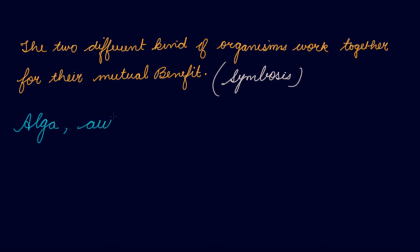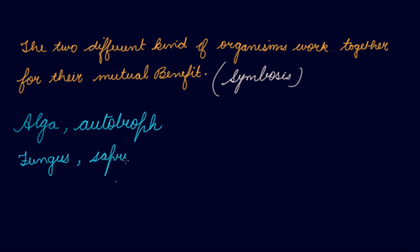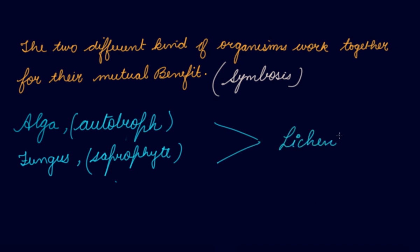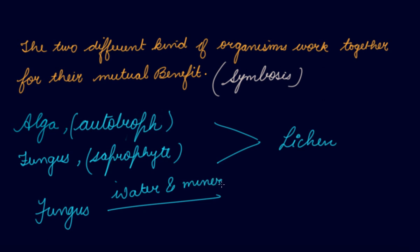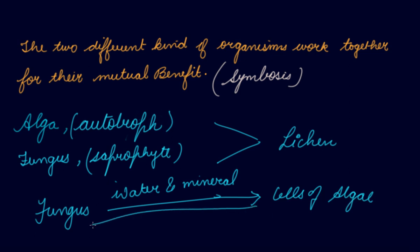Algae is an autotroph, whereas fungus is a saprotroph, which means it depends on dead and decaying matter for food. They live together — the fungus supplies water and minerals to the cells of algae, and in return, algae supplies food to the fungus. Such a mutually beneficial relationship is called symbiosis.